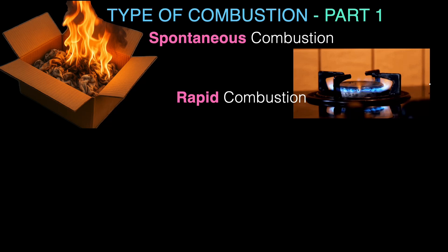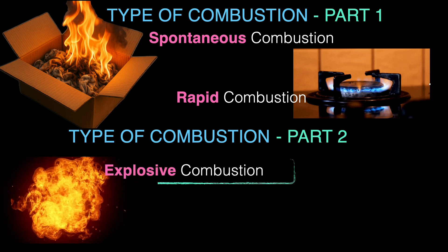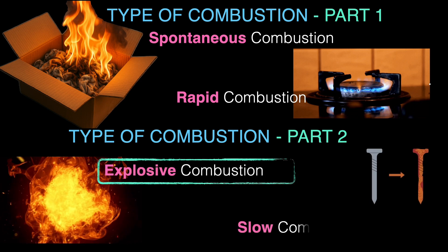In our previous video on types of combustion (part one), we understood what rapid combustion is, saw some examples, and covered spontaneous combustion. Now in part two, we will cover two more types of combustion: explosive combustion and slow combustion.